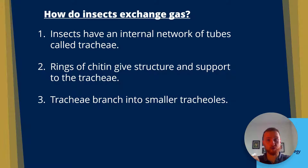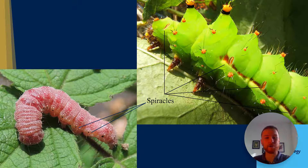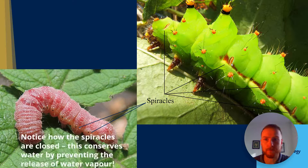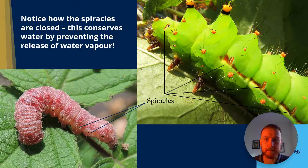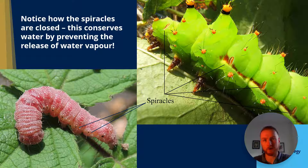The tracheae branch into smaller tracheals — think about the bronchi in the lungs branching into smaller bronchioles, or the arteries in the body branching into smaller arterioles. Oxygen is delivered to respiring tissues and cells through the tracheals. Here we can see spiracles on the side of insects, and they can actually open up to allow the exchange of gases. Notice how when the spiracles are closed, this conserves water by preventing the release of water vapour — they remind me a little bit of the stomata on a plant, which is controlled by guard cells.